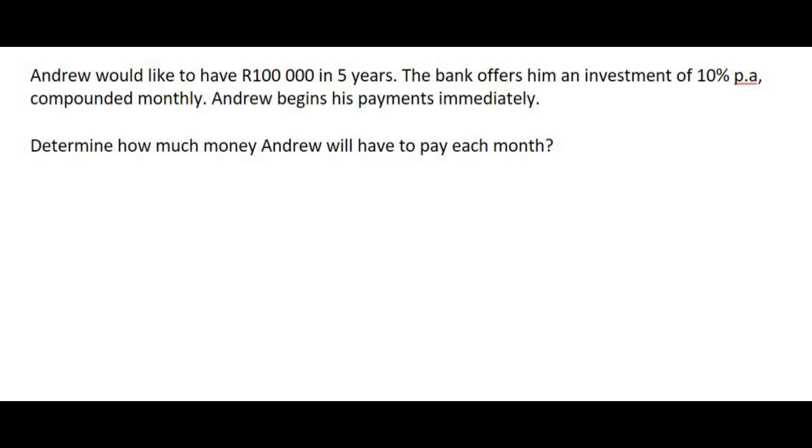The key things to look out for are the following. Is it a present value or future value? Well, that R100,000, he only wants it in five years time, so that's future value. Then the next thing to look out for is the compounding. It says it's compounding monthly, and then you've got to try to see if the number of payments are going to change from the base number.